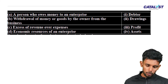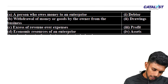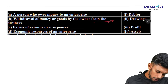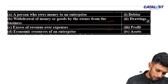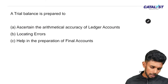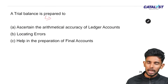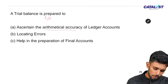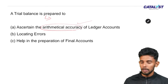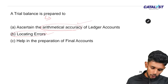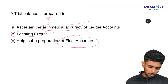Key definitions: the person who owes money to an enterprise is a debtor. The withdrawal of money or goods by the owner from the business is called drawings. Excess of revenue over expenses is profit. The trial balance is a statement prepared to know the arithmetical accuracy of ledger accounts and to locate errors. Final accounts are prepared to know the financial performance of the business.